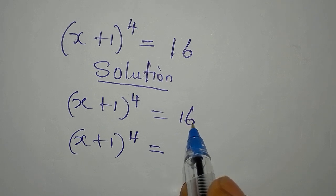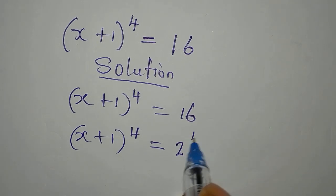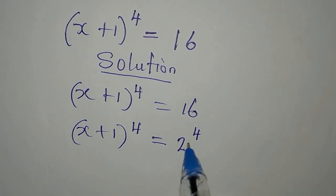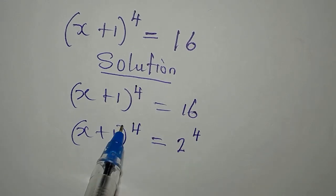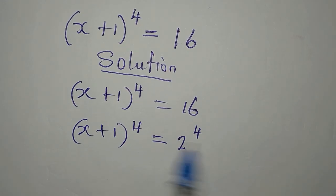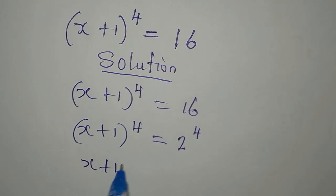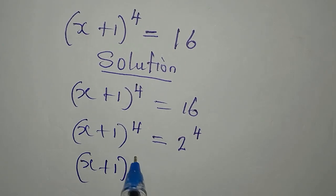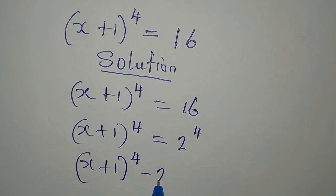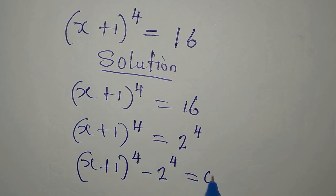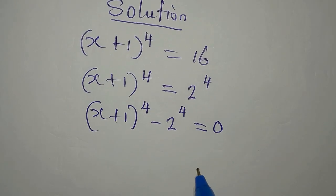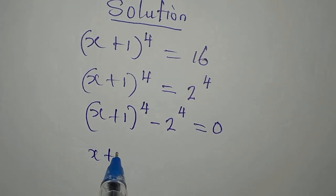Here 16 is 2 to the power of 4. Now that we have the same form on both sides, we're going to bring it to the left because we want to get all the solutions. So we have x plus 1 to the power of 4 minus 2 to the power of 4 equals 0.